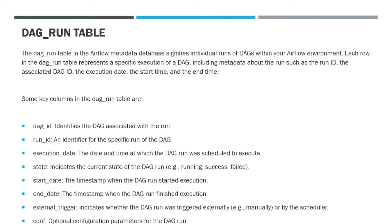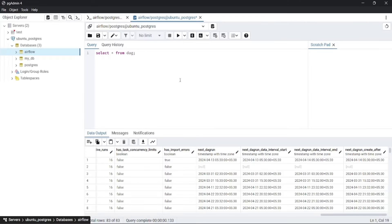Then start_date, which denotes the timestamp when the DAG run started execution. end_date, which denotes when the DAG run finished execution. external_trigger, which indicates whether the DAG run was triggered externally/manually or it's a scheduled run. Then configuration, which denotes the optional configuration parameters required for the DAG run. Now let's query the dag_run table.